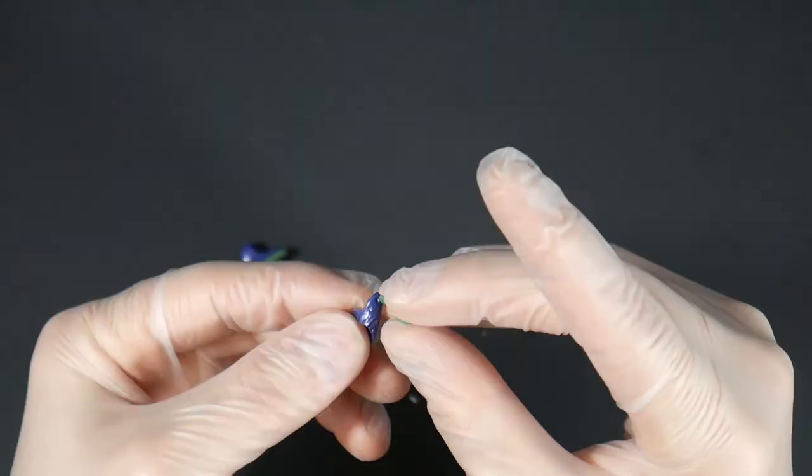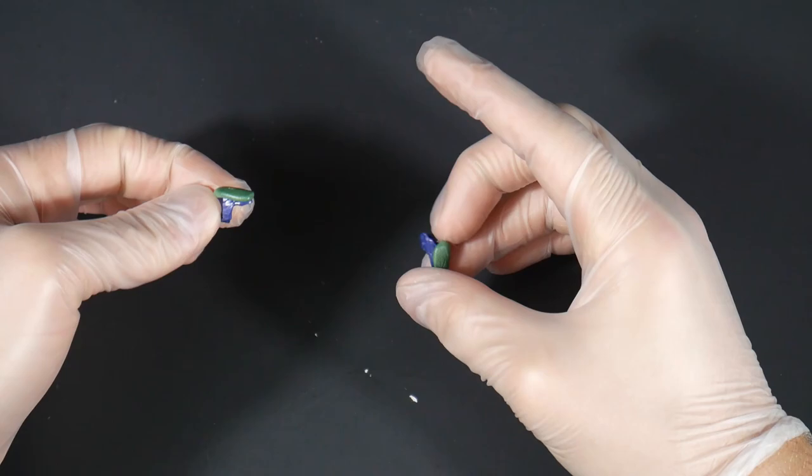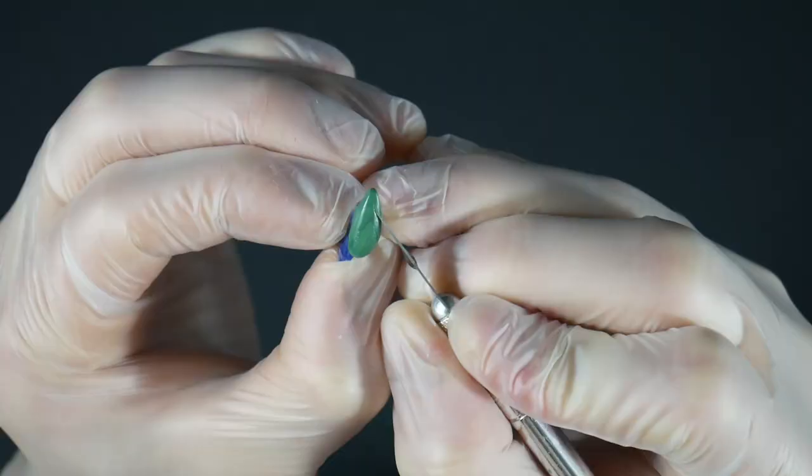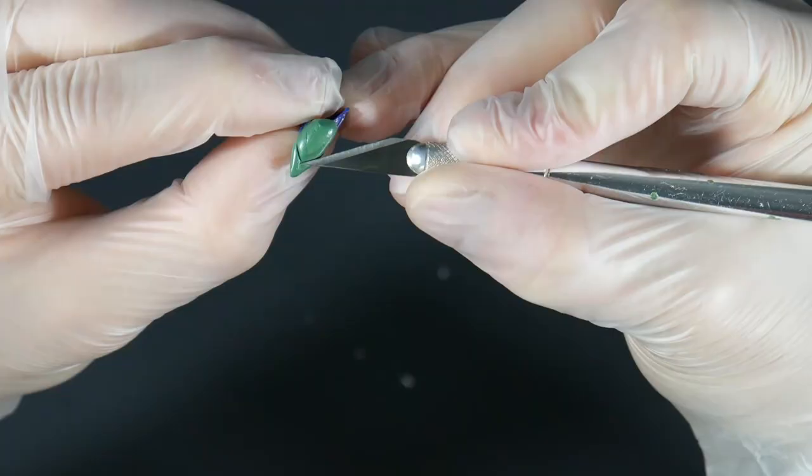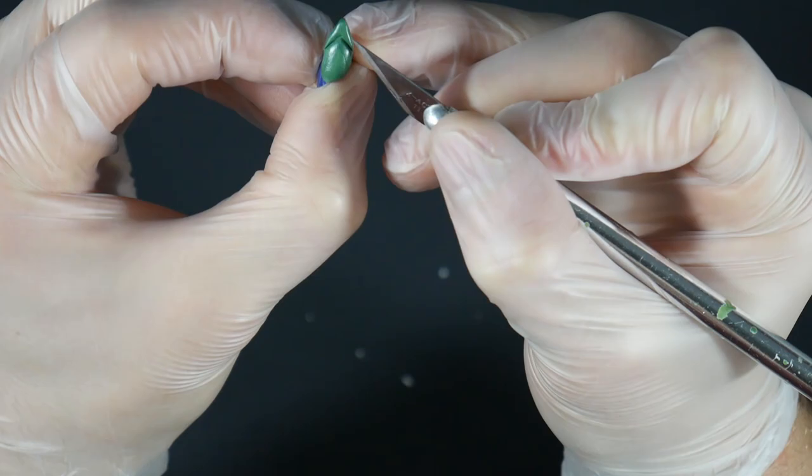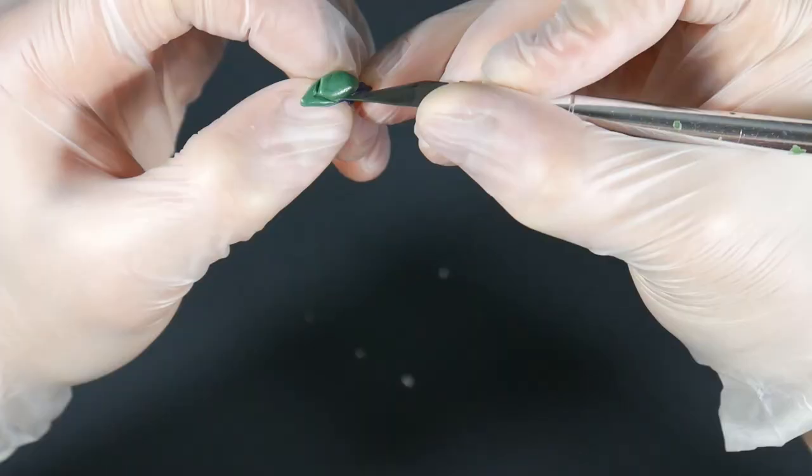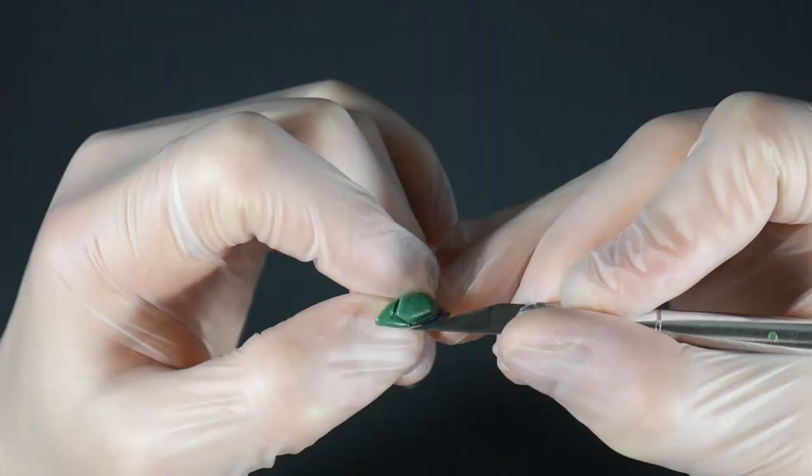Then this is gonna be the thigh guard. I added some green stuff onto each one of the thighs and just kind of sculpted it with my hands. Then I just used my X-Acto blade and carved out what I wanted for the detail.